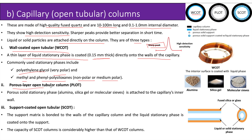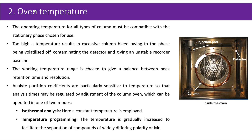Next is the porous layer open tubular column (PLOT), where a porous solid stationary phase such as alumina, silica gel, or molecular sieves is attached to the capillary's inner wall. Then there is the support coated open tubular (SCOT), where a support matrix is bonded to the walls of the capillary column and the liquid stationary phase is coated onto the support. The capacity of SCOT columns is considerably higher than wall coated open tubular columns.